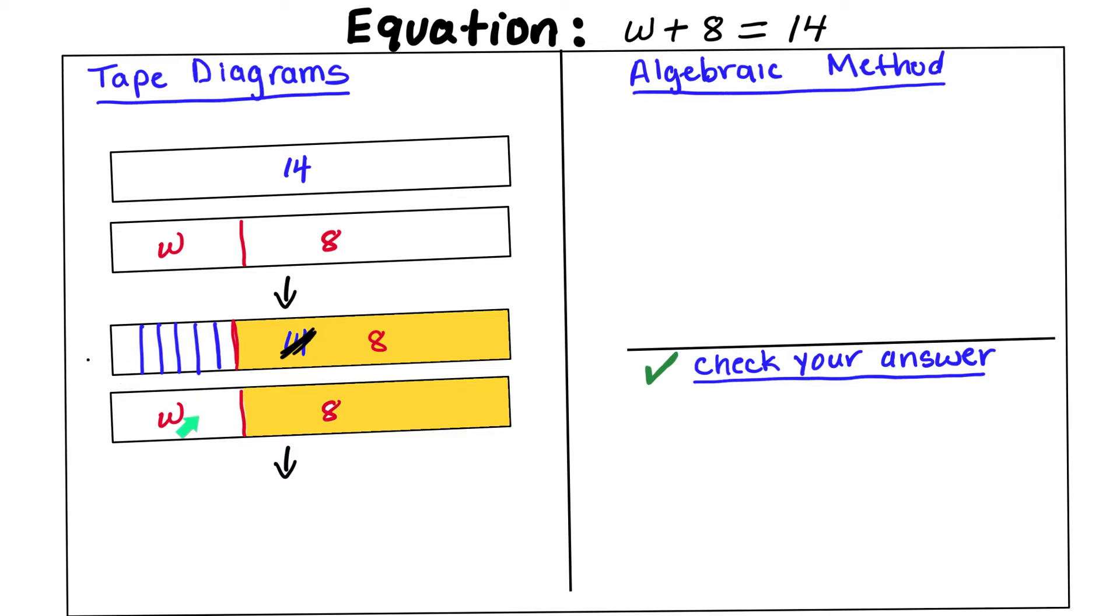So we can see the w is 6. Let's pretend that it was a huge number, you cannot do it in your head. Well, we know that the inverse of adding will be subtraction, right? So we could subtract 14 minus 8, and then that will give us the 6. So now we know the w has a value of 6.